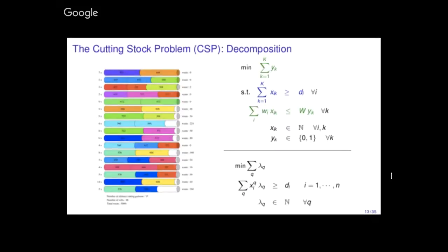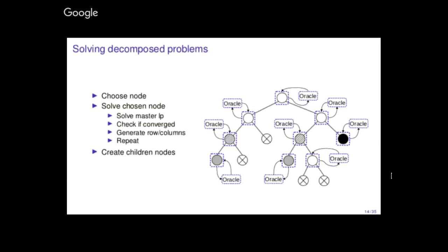Coming back to the cutting stock example, the reformulation would be something like this: we minimize the number of cutting patterns used, subject to covering the demand. You may ask — if you're enumerating all integer feasible points to an integer program, this may lead to many points. This is true, but we actually don't generate these points a priori. Now I'll talk about how to solve the problem once it's decomposed.